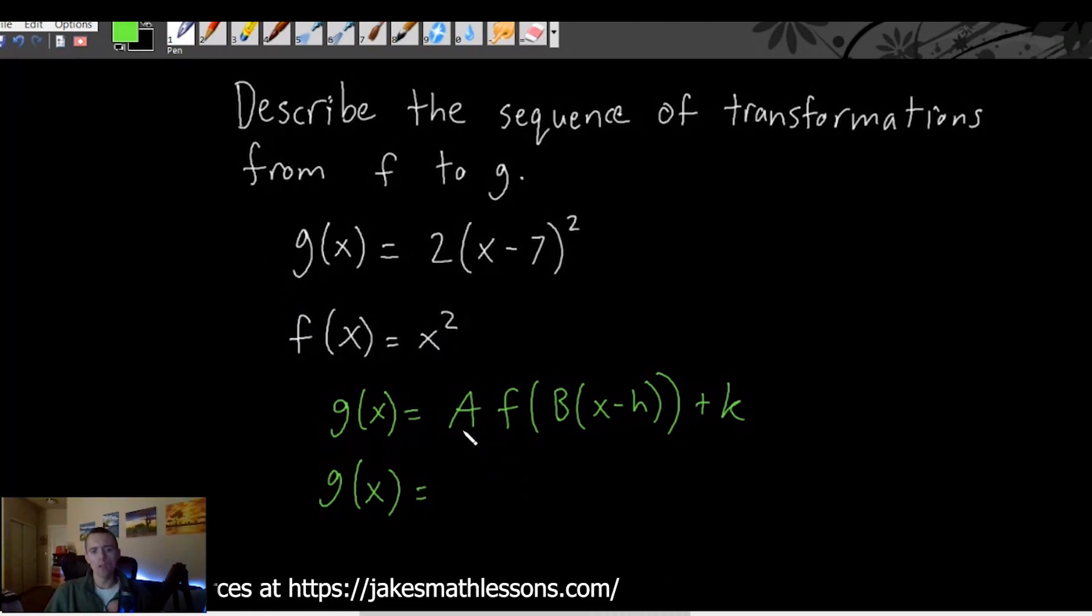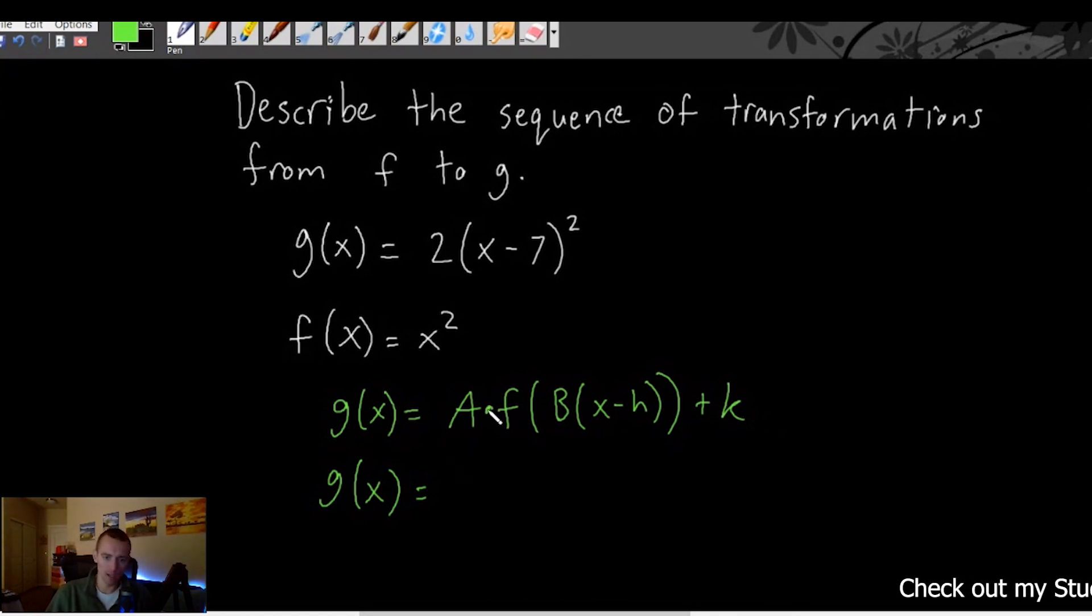So think about what g(x) would be if we know f(x) is x² and we're trying to find A·f(B(x - h)) + k. So basically what this notation is saying is we're going to have A times whatever this whole thing is plus k.